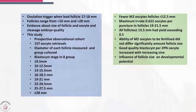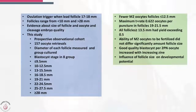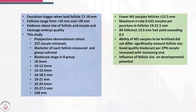Let's look at the protocol. Ovulation trigger was given when the lead follicle was 17 to 18 mm. Follicles ranged from less than 10 mm to more than 28 mm, which is what we normally see. There is existing evidence about follicle size and oocyte quality, maturity, and cleavage embryo quality, but we don't have much data on what happens with blastocyst culture.